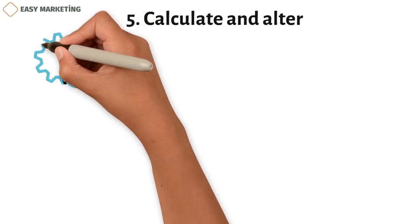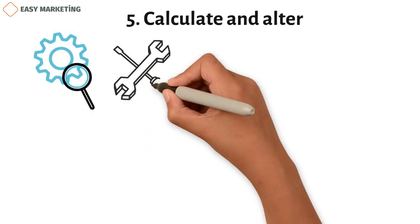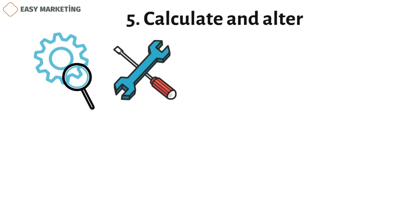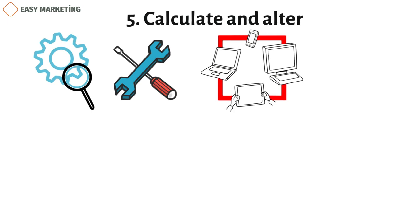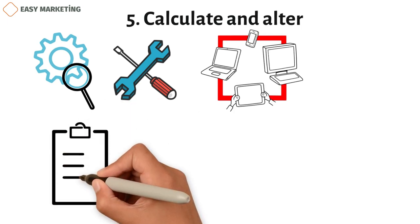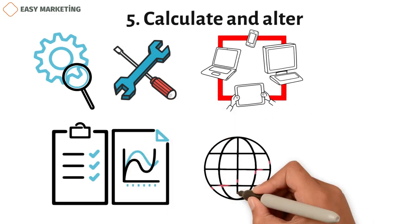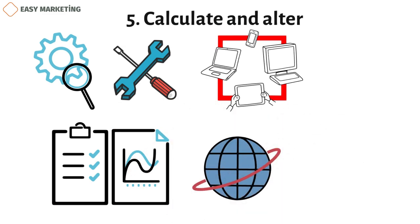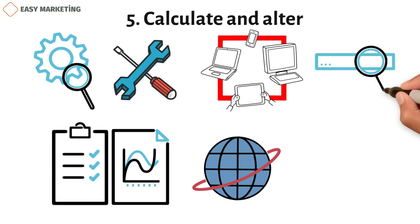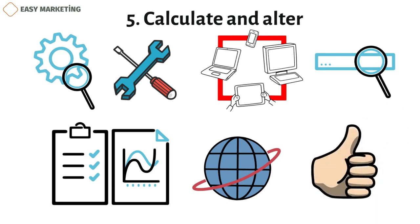Step 5: calculate and alter. Set up ways to measure and change your marketing strategies based on how well they are working, which will give them a more dynamic feel. This could mean using technology to evaluate and change the marketing materials given to each customer based on answers and data that have already been set. You could also set up a regular review cycle to look at the big trends in the data you've collected and how they relate to what your clients do, or use surveys and other customer response data to check how well your dynamic marketing campaigns are working from time to time.